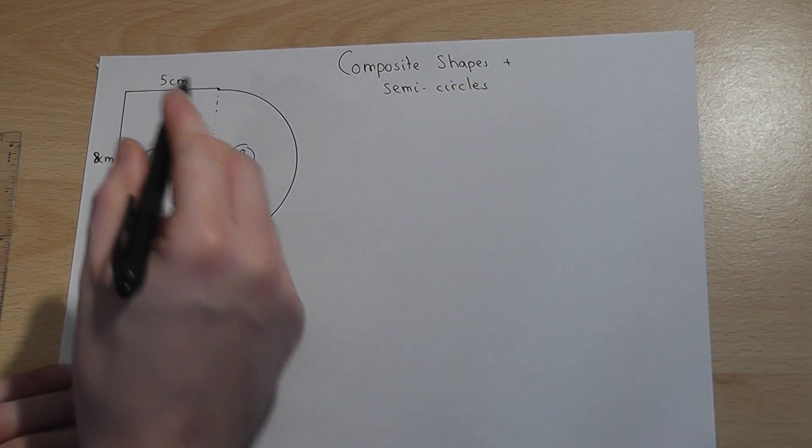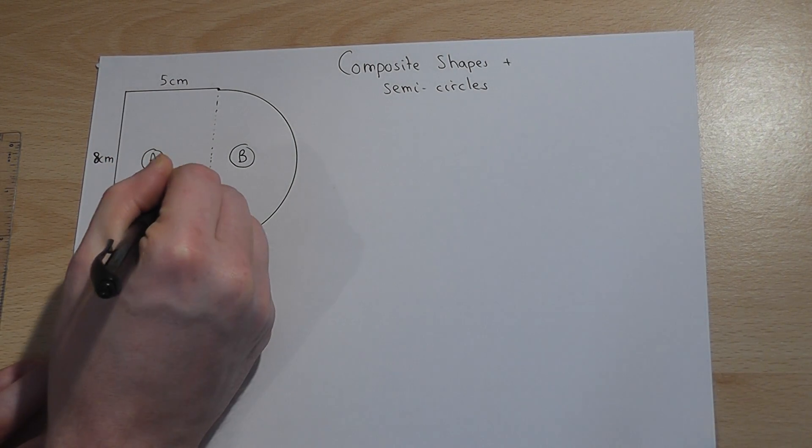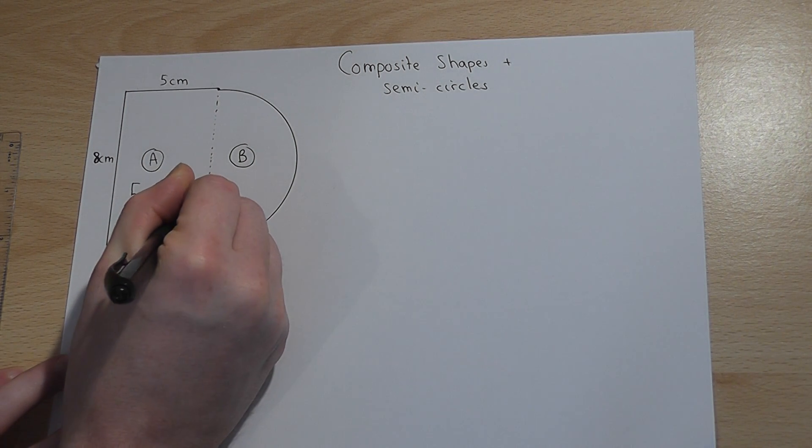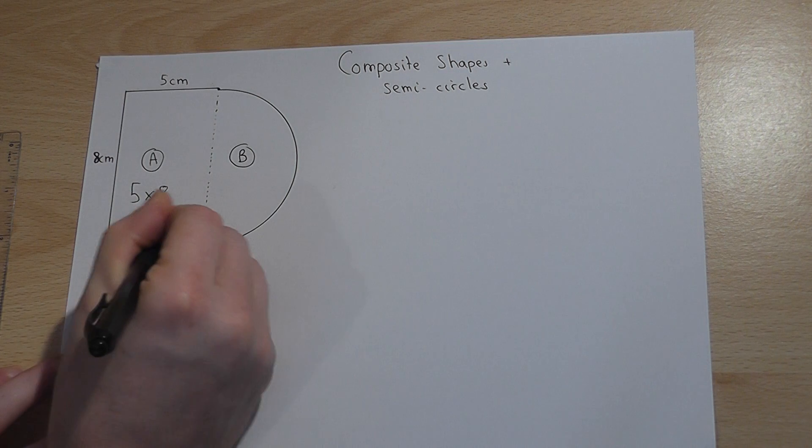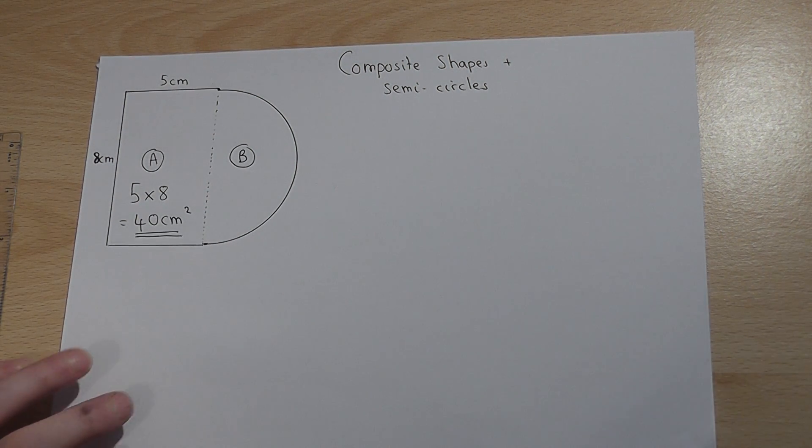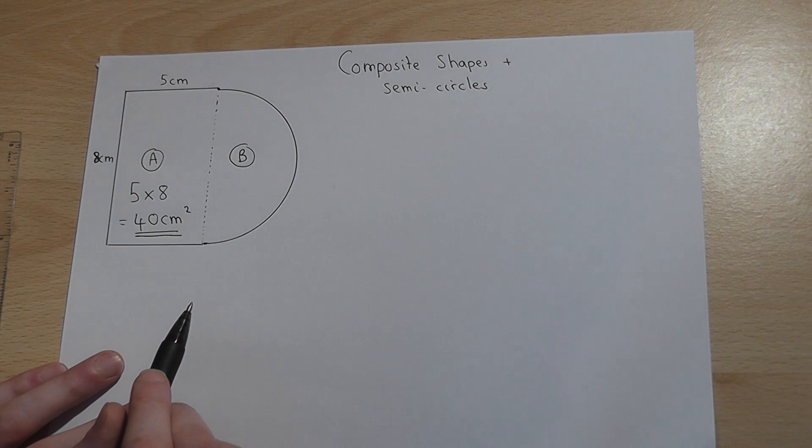Now the area of the rectangle is very easy, that's just five times eight which equals 40 centimeters squared. However the issue really is in shape B, a semicircle.